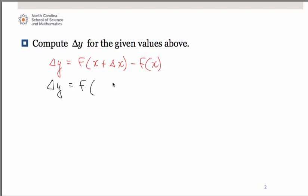Our x value is 2, delta x is 0.05. So we have the function value at 2.05. We're going to get that by substituting into the original function, remember, minus f of 2.